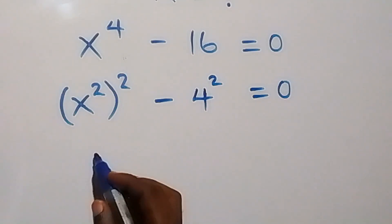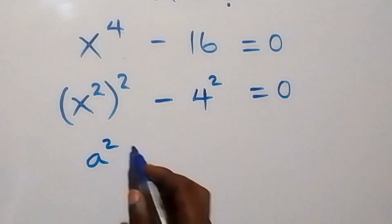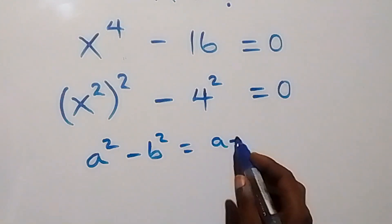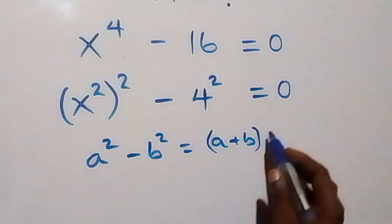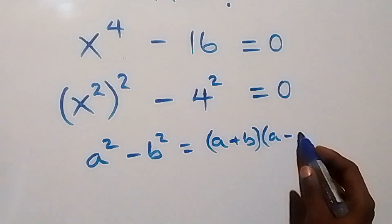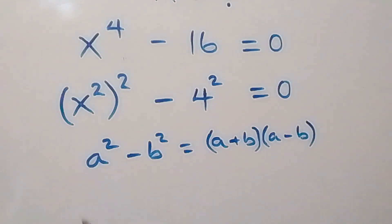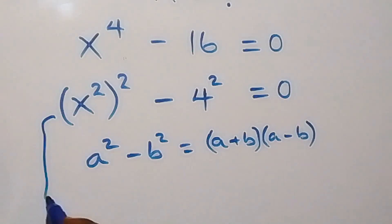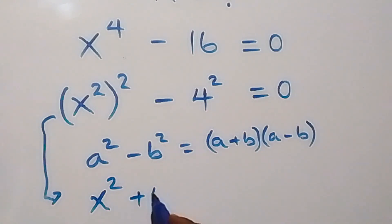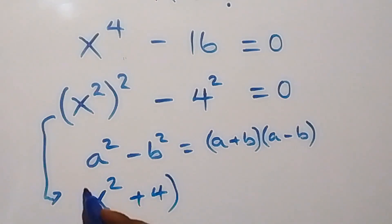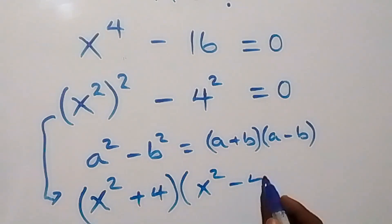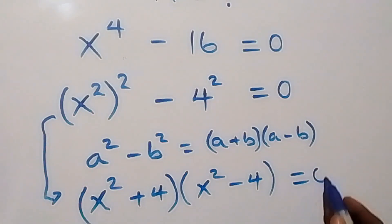This follows from the identity a squared minus b squared, which can be written as a plus b times a minus b. Here we treat a as x squared and b as 4. So what we have becomes x squared plus 4, times x squared minus 4, equals to 0.